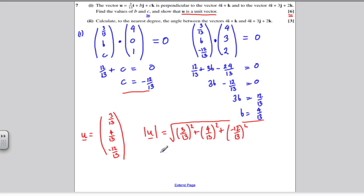And you get, when you do that, you get the square root of 169 over 169, which is 1. So the magnitude of the vector U is 1, therefore U is a unit vector. And we've done.